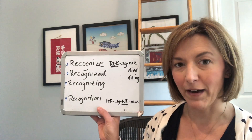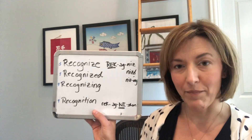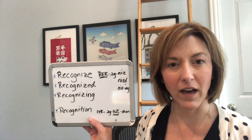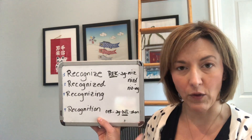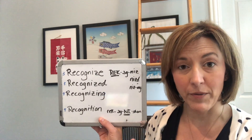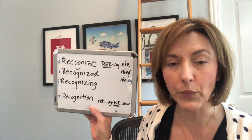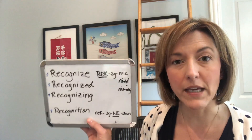Hi, this is Jennifer from Tarle Speech with your pronunciation question. Today's question is: how do I pronounce the word 'recognized,' and how do I add the suffixes -ed, -ing, and -tion? Let's take a look at my chart. You're going to see numbers, which I typically don't have on my directions, because they tell you how many syllables we have in each word. Let's start with the root word 'recognize' — three beats, three syllables.